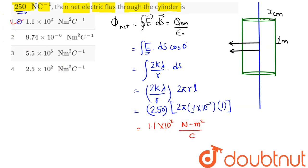That is amongst the 4 options. We have option number 1 as the correct answer. Hence, we can say net electric flux through the cylinder is 1.1 into 10 power 2 newton meter square per coulomb. So, 1 is our answer.